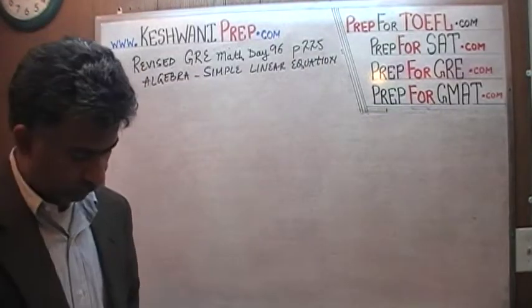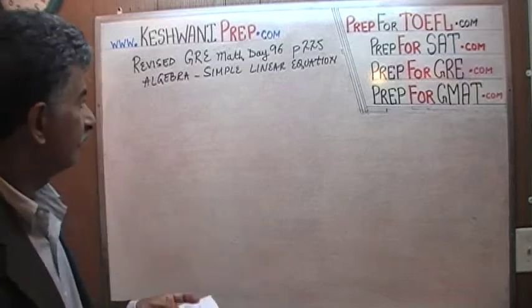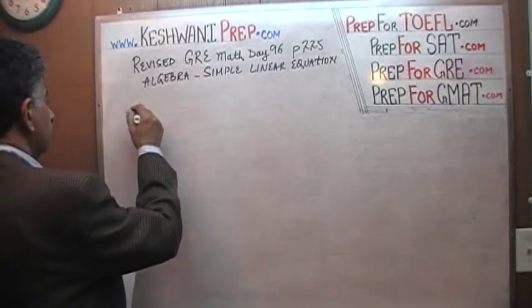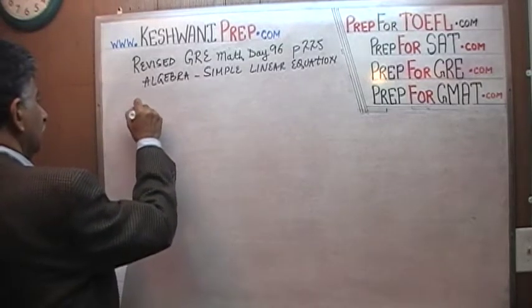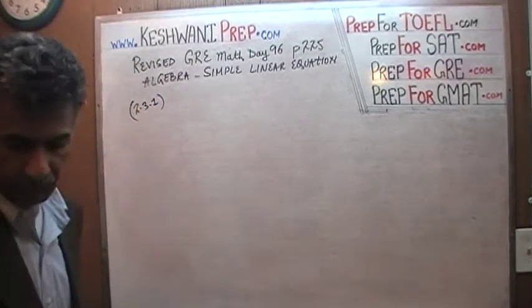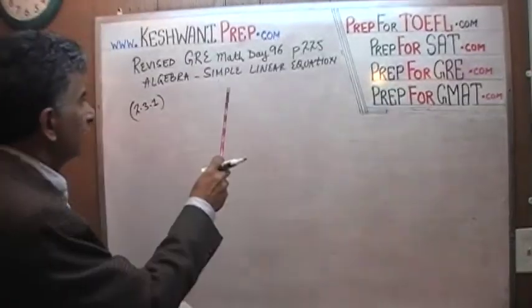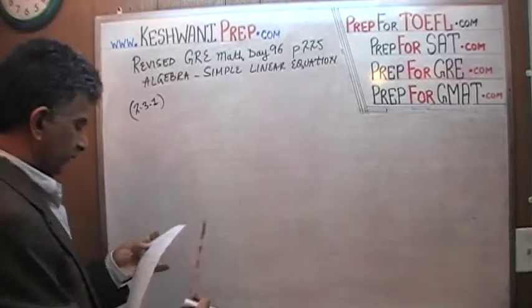The problem that we are about to solve is the one that you will find on page number 225. It is the problem number 2.3.1. It is a very simple, very straightforward problem. It is a very simple, simple linear equation. Here is the equation.